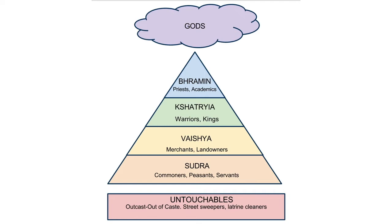Just below the Sudras — actually quite far below them — is a group called the Untouchables. You may also hear them referred to as the Pariahs, a word still used in modern vocabulary for people who are outcasts and not really part of society at all. These are people who did things like clean toilets, sweep streets, and they couldn't even walk on the pathways — they had to walk in the gutters.